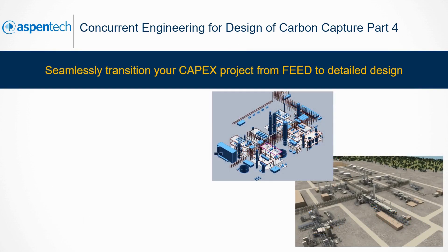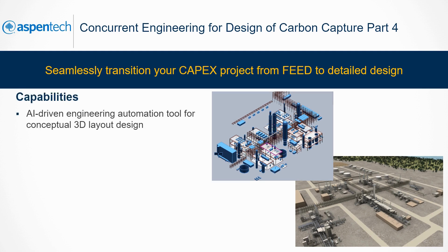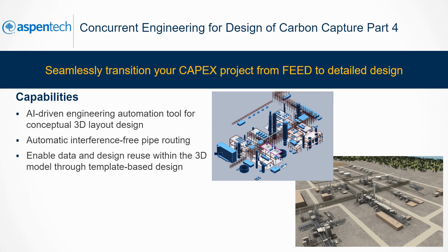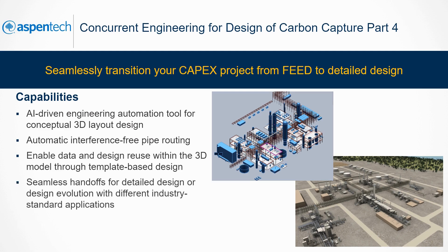Detailed estimating occurs towards the end of project development. Making changes and correcting mistakes at this stage causes more difficulties and costs. The best practice is to meet logistic and sustainability requirements at an early stage. Aspen OptiPlant is an AI-driven engineering automation tool that provides conceptual 3D layout design. It features automatic, interference-free pipe routing by leveraging simulation information and economic evaluation. We can interactively and rapidly create and analyze multiple layout designs for early optioneering in a 3D environment. Aspen OptiPlant supports reuse of standard formatted designs from files or templates, for example, PFDs.